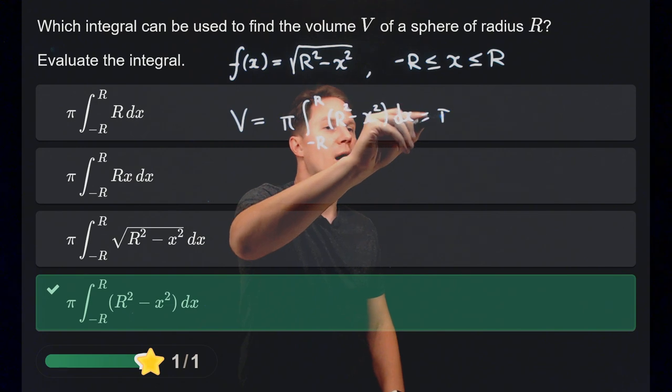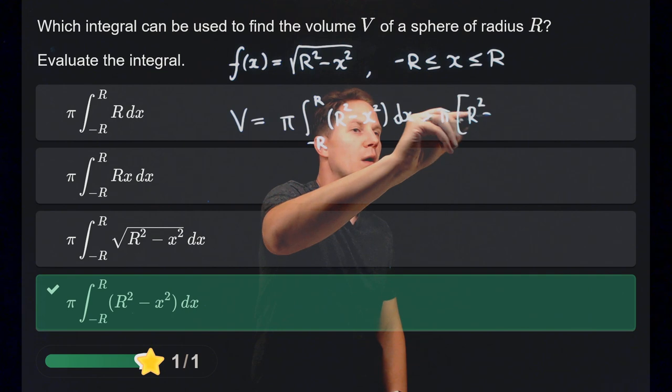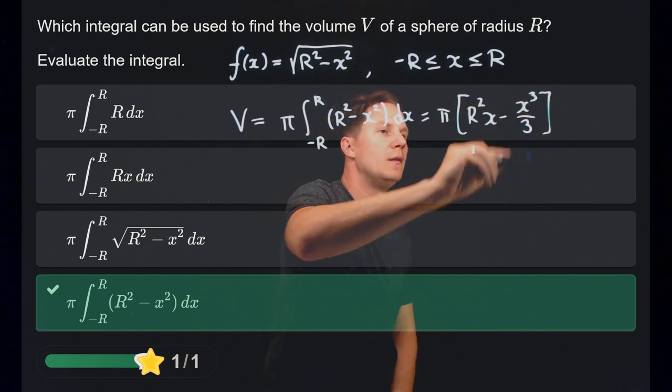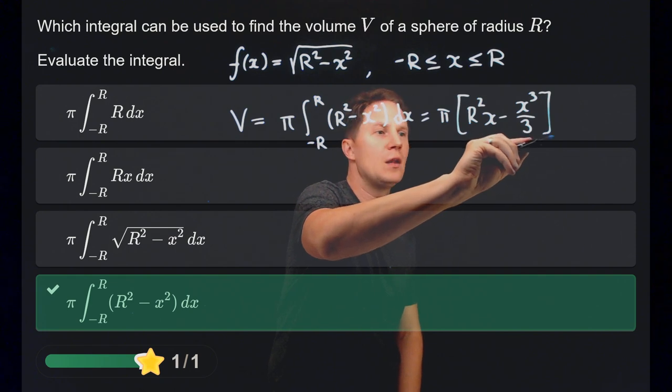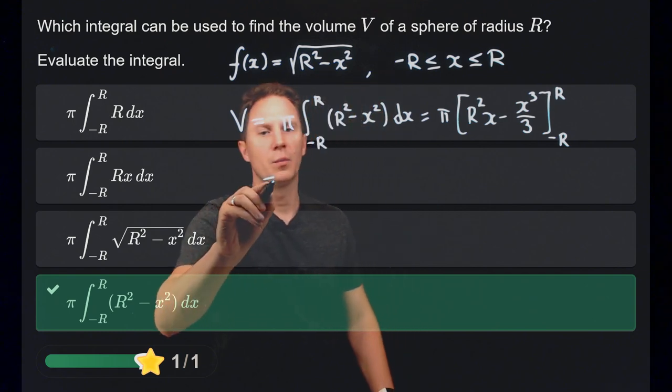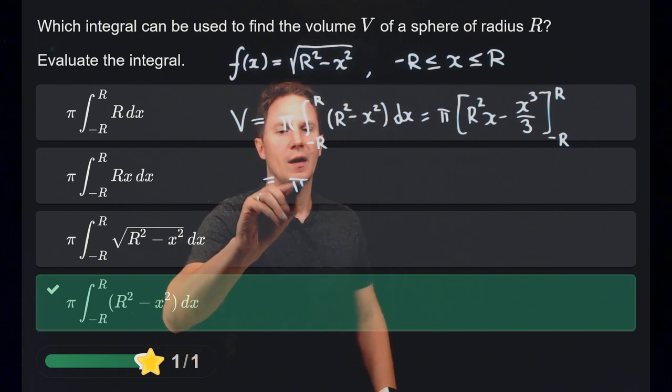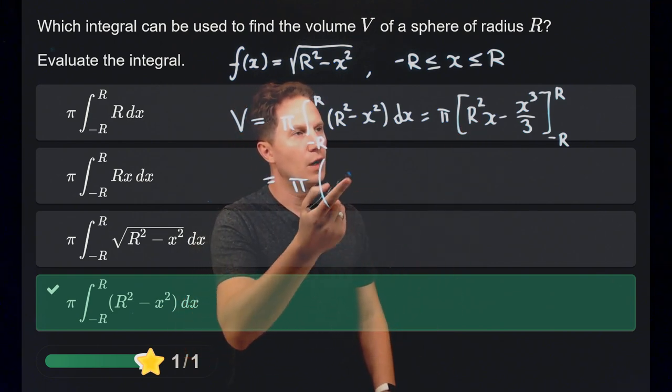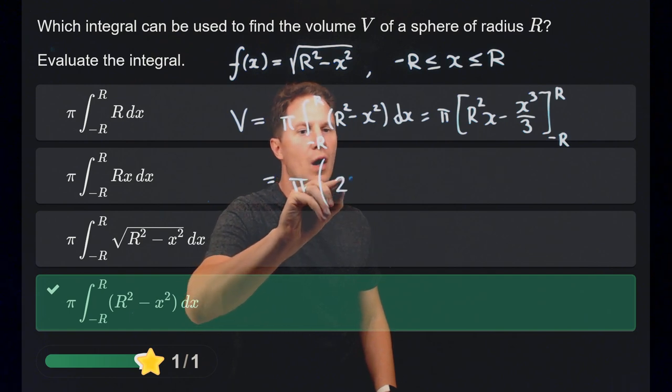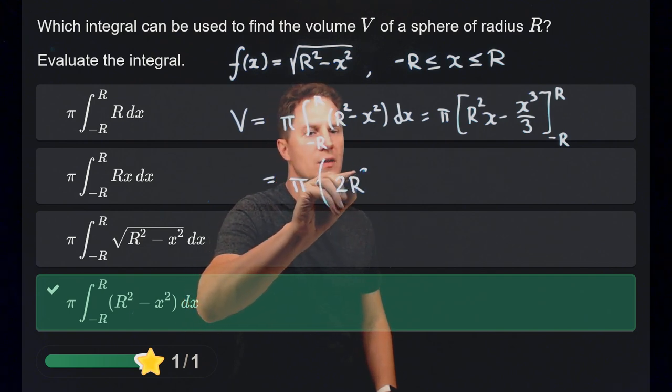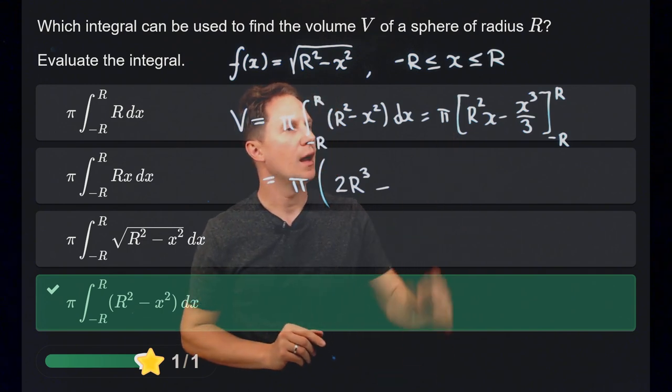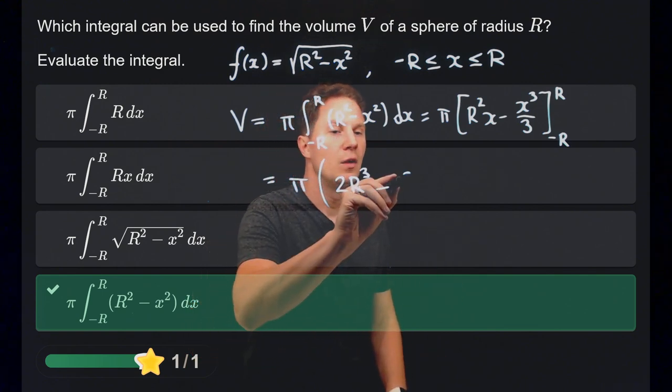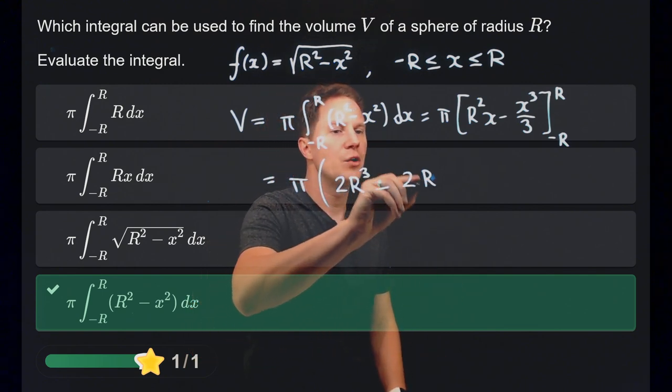So that is pi times r squared x minus x cubed over 3. This is an anti-derivative, its change from negative r to r is what we need to compute. So it's pi times, well, the change in r squared x as x goes from negative r to r is 2r times r squared, so 2r cubed, whereas the change in x cubed over 3 as x goes from negative r to r is 2r cubed over 3.